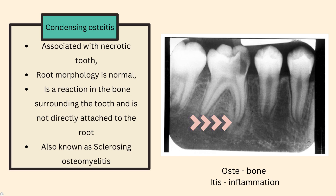Number two is that the root morphology is normal. As you can see, there is radio opacity surrounding the roots of the tooth, but the root morphology is normal. The roots are not big — they are of average length and size.